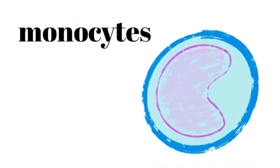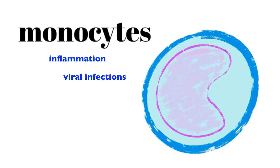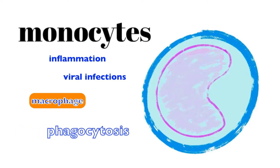This here is a monocyte. It is prevalent during inflammation and viral infections. Once it leaves the bloodstream, it's referred to as a macrophage — so flowing through the blood within the plasma it is known as a monocyte. Its activity is phagocytosis, which is engulfing and breaking down either foreign debris, old decrepit tissue, infected cells, or foreign pathogens.